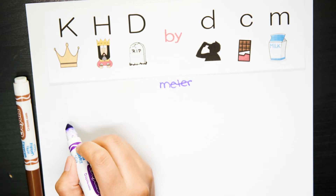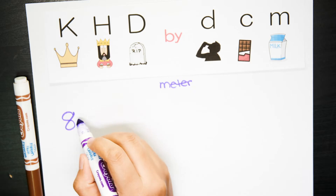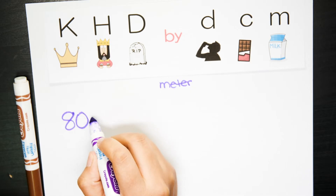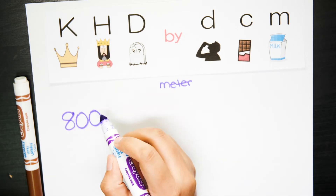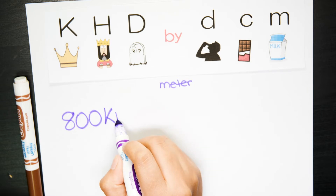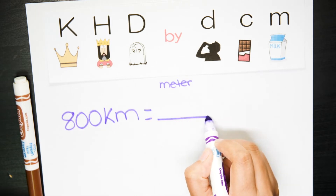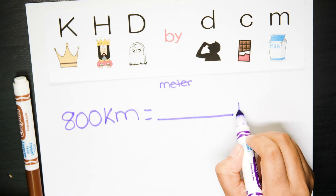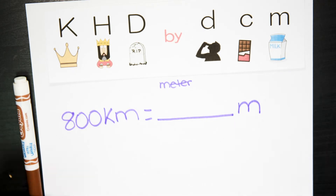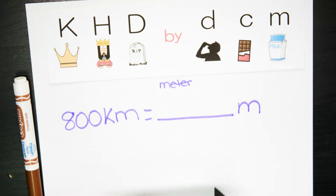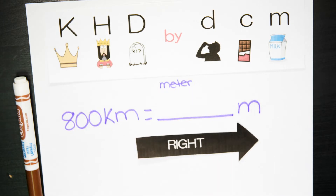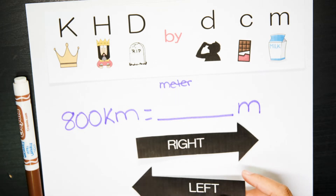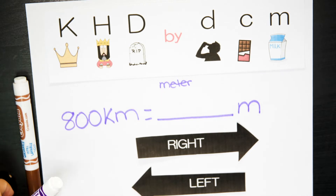So for this lesson, I would like you to write down on a paper 800 kilometers, and I would like you to convert that into meters. The first thing that you need to do is to find out the direction of the conversion — if you're moving to the right or if you're moving to the left.